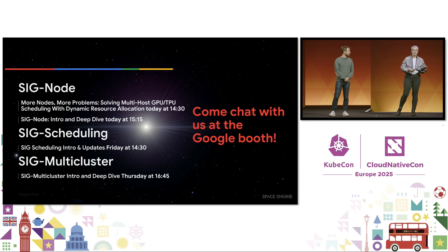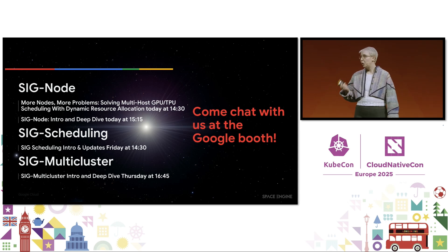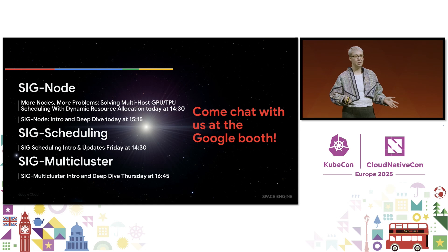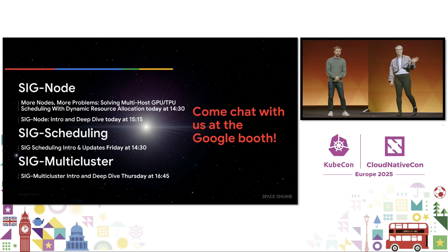We've just scratched the surface of what's available today and the directions that Kubernetes is going. Myself, our coworkers at Google, and everybody in the Kubernetes community are working hard to give you the tools to level up scheduling for your workloads. This KubeCon is full of talks that will allow you to explore this new age of dynamic provisioning, and you can always come visit us at the Google booth and ask us more. We look forward to seeing you there — thank you for having us.